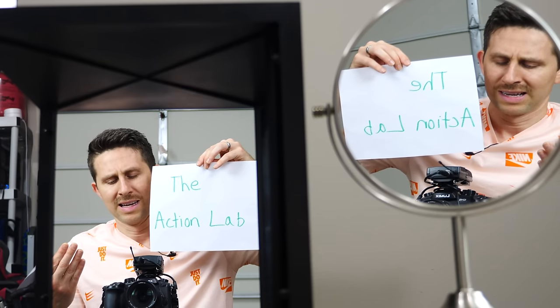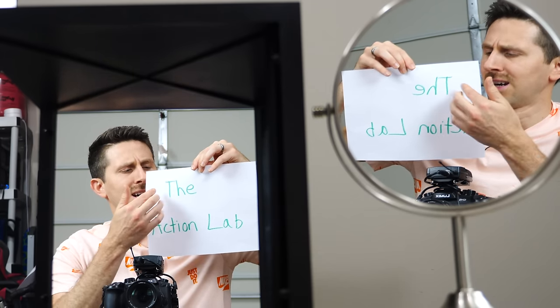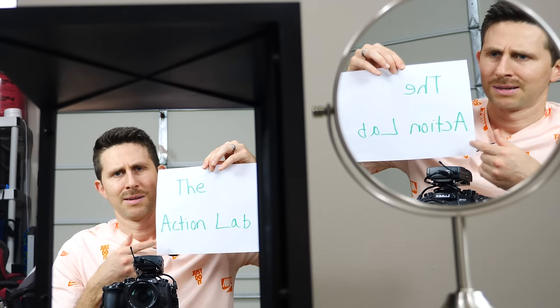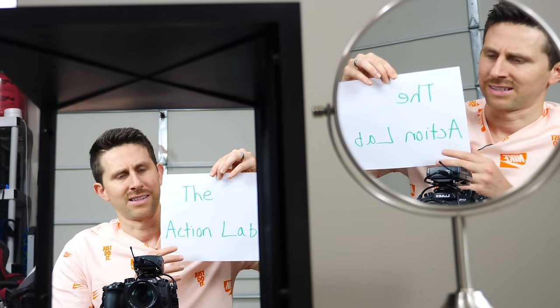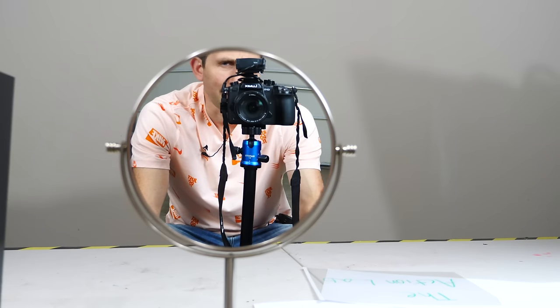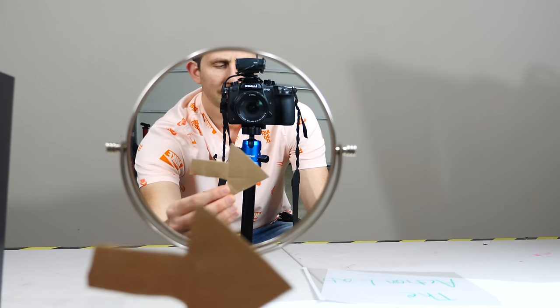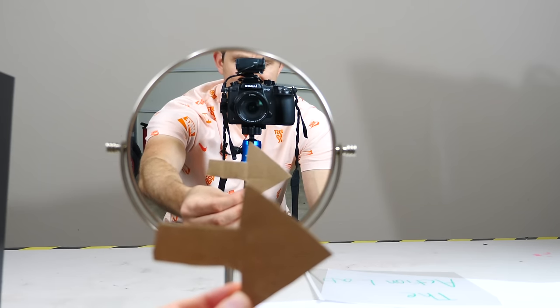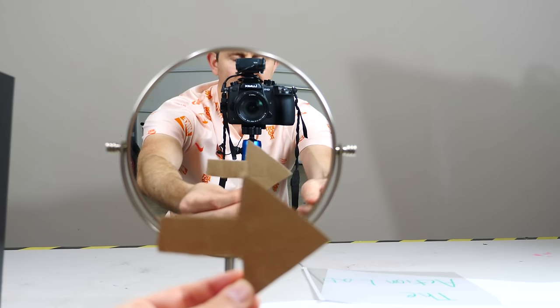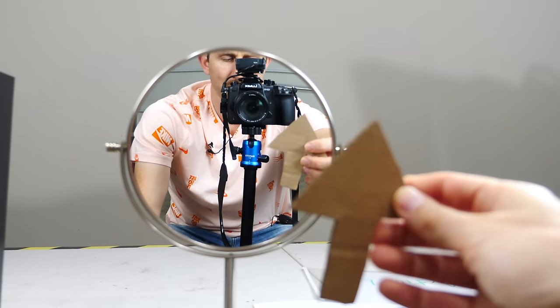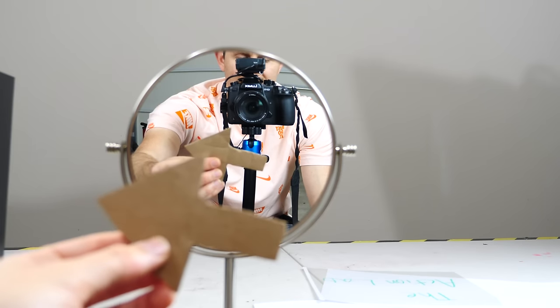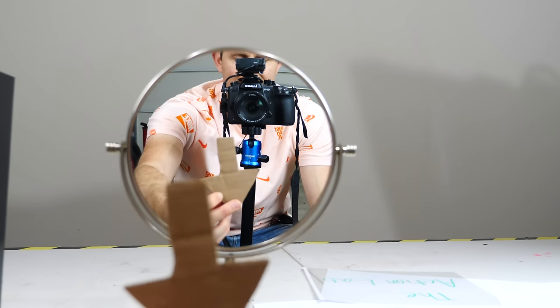So how does the true mirror work? How is it that in a regular mirror I'm seeing these words flipped, but in the true mirror I'm not? To understand this, we have to first understand how a regular mirror works — why does a regular mirror flip the image in the first place? Let me hold up an arrow in front of this mirror. So far, it doesn't seem like it's flipping anything. The arrow's pointing to the right, so is the mirror. The arrow's pointing up, so is the mirror. Points to the left, so is the mirror. Points down, so is the mirror.